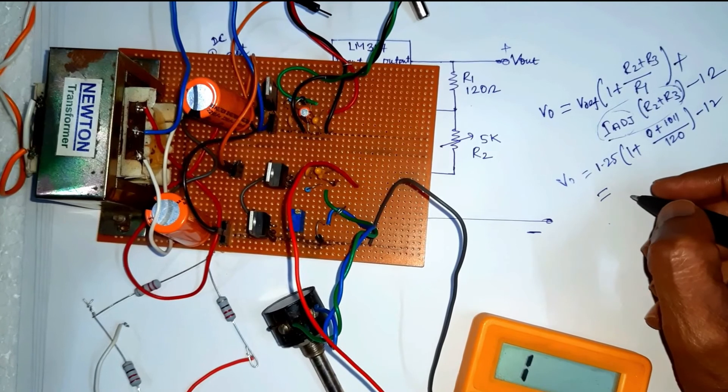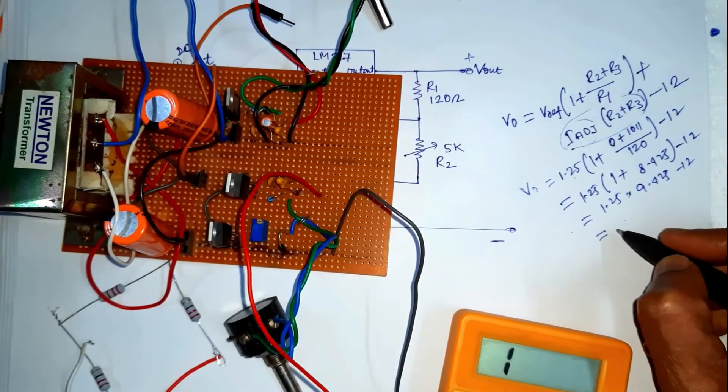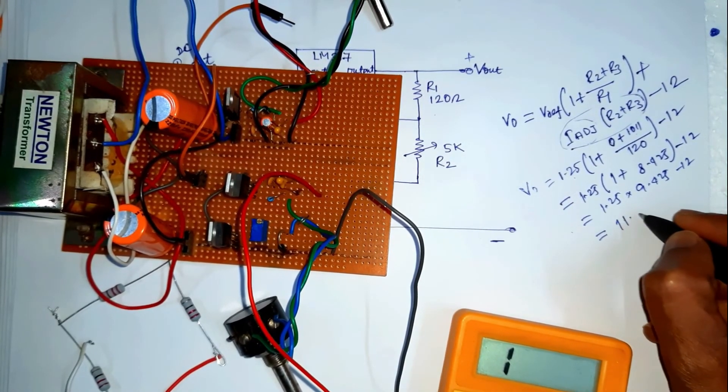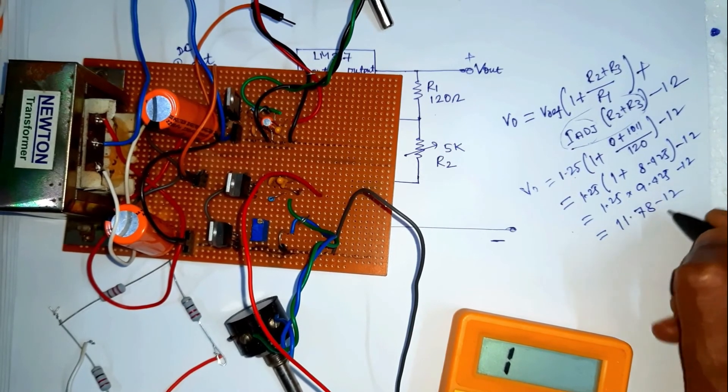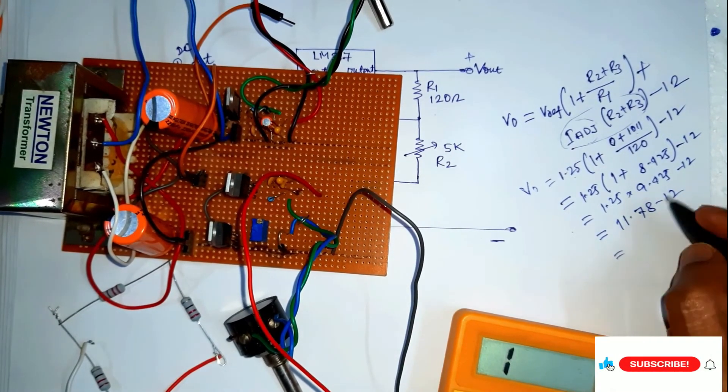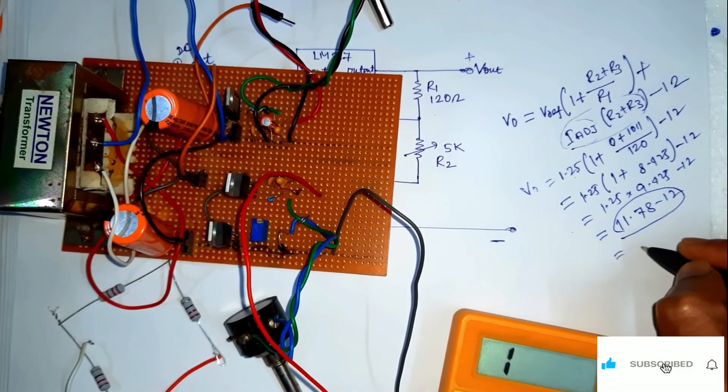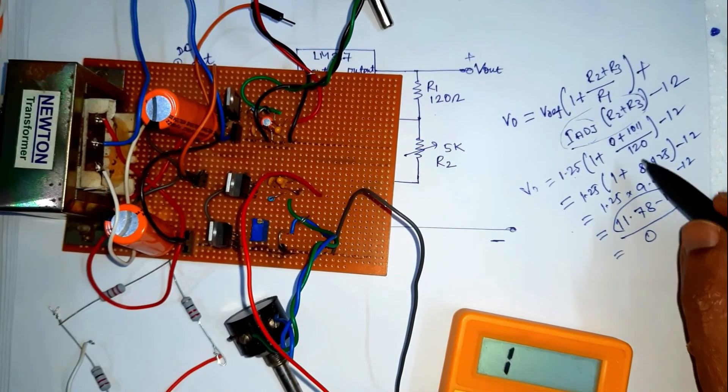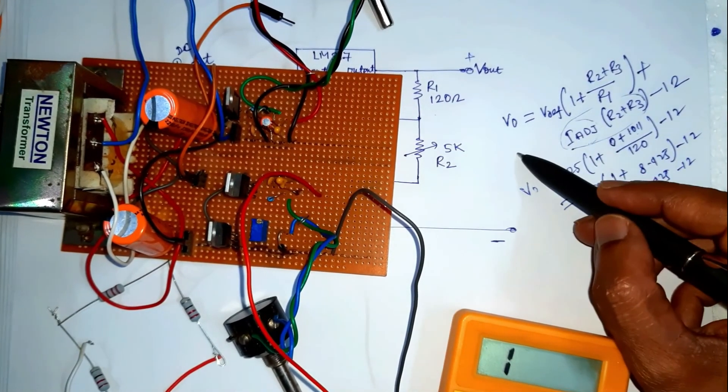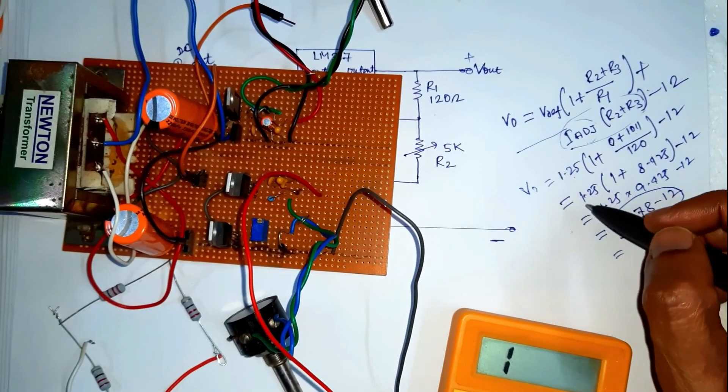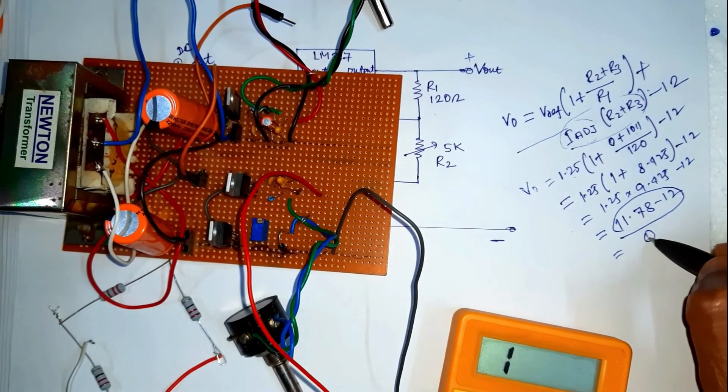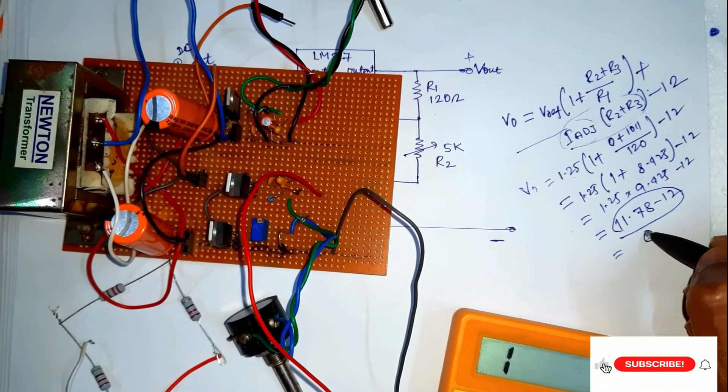So it will be near about equal to 11.78 minus 12, so near about 0. So theoretically from this equation we are getting the output voltage near to 0.